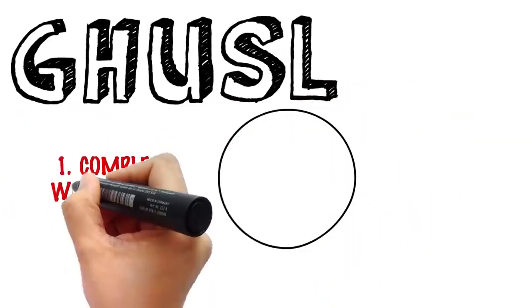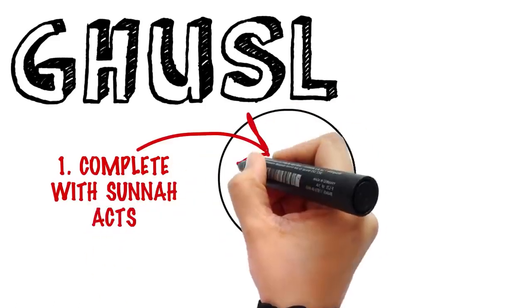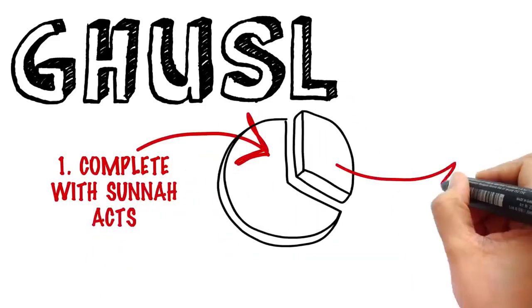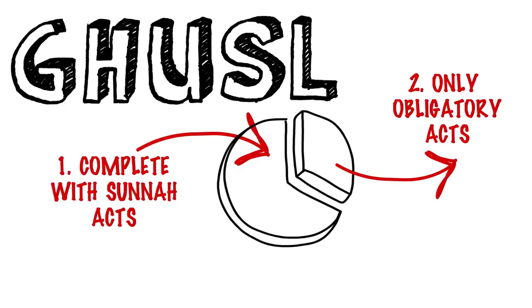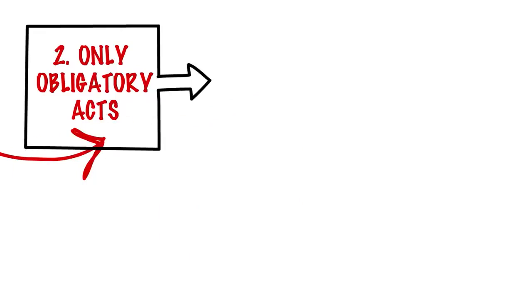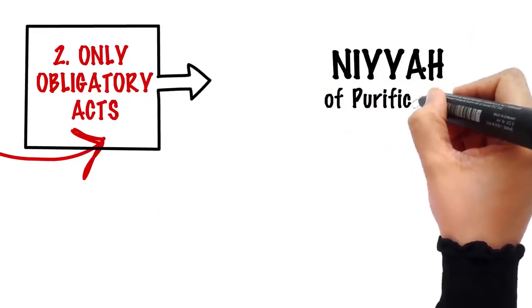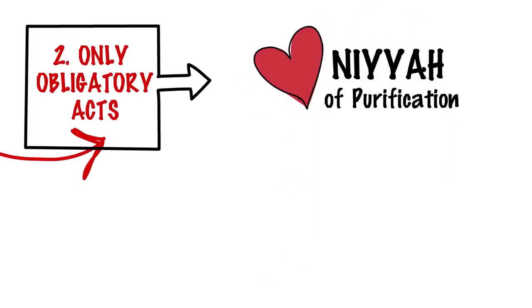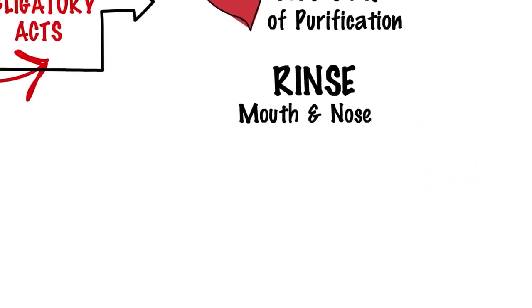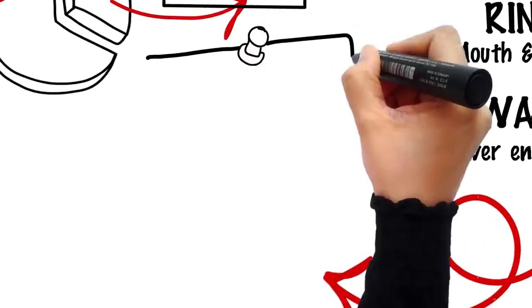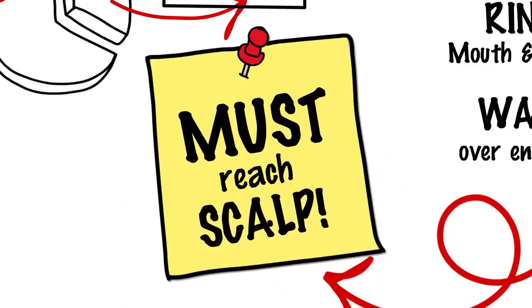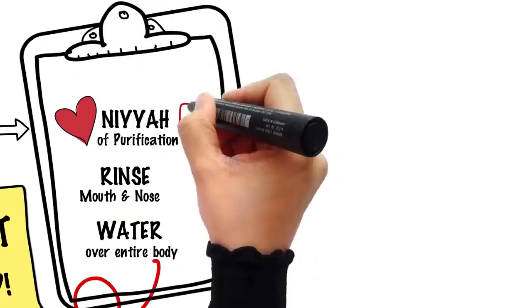And ghusl can be taken in two ways: a complete ghusl with all the sunnahs of the prophet, and a partial or a sufficient ghusl, which means only doing what is obligatory to free yourself from the ritual impurity. So what are these obligatory acts of ghusl? Beforehand, niyyah intention that you are taking this bath to purify yourself from the major ritual impurity, rinsing your mouth and nose, and letting water run over your entire body at least once. Make sure it reaches every part of it, even your scalp under the thick hair. If you manage to do this much, then you have purified yourself from the major ritual impurity.